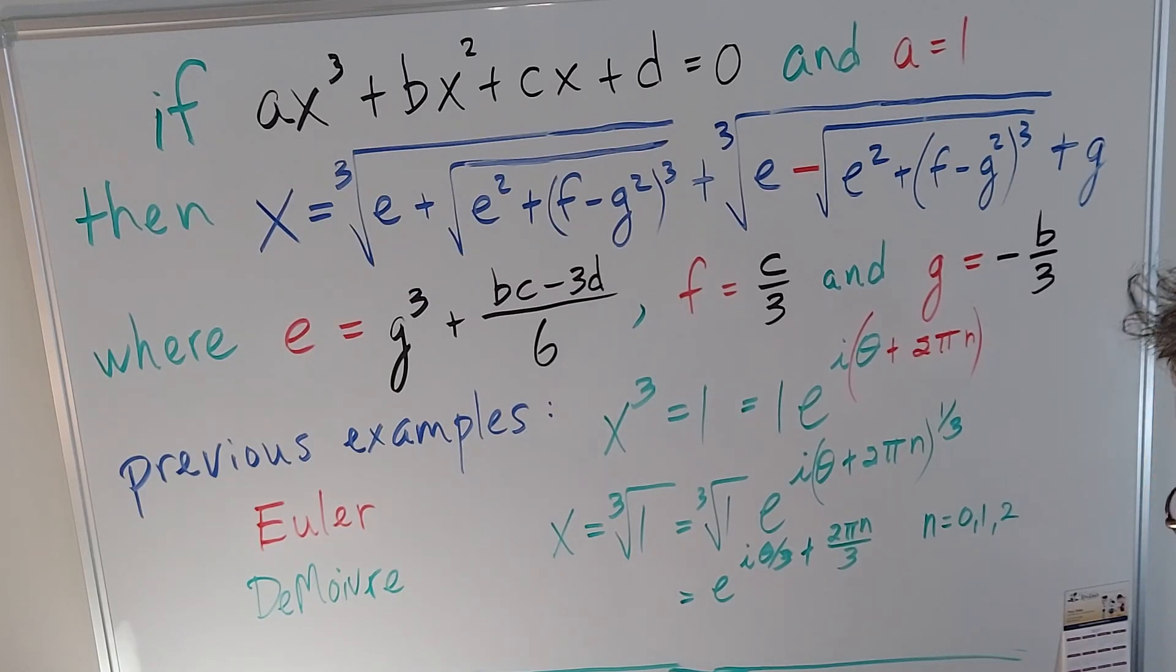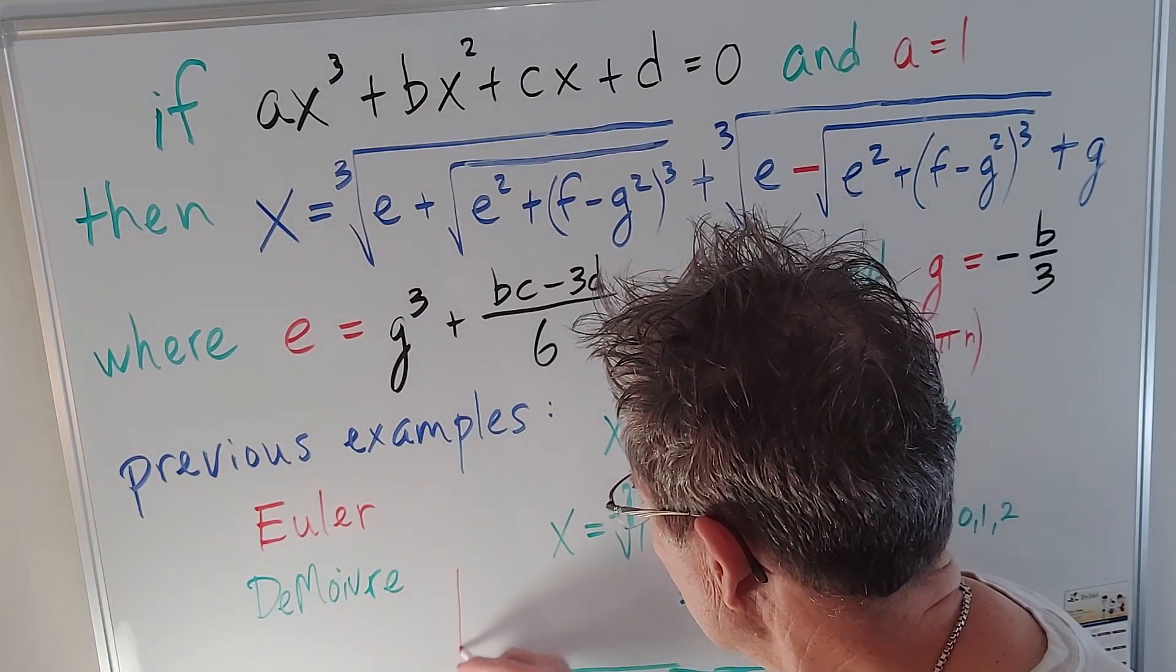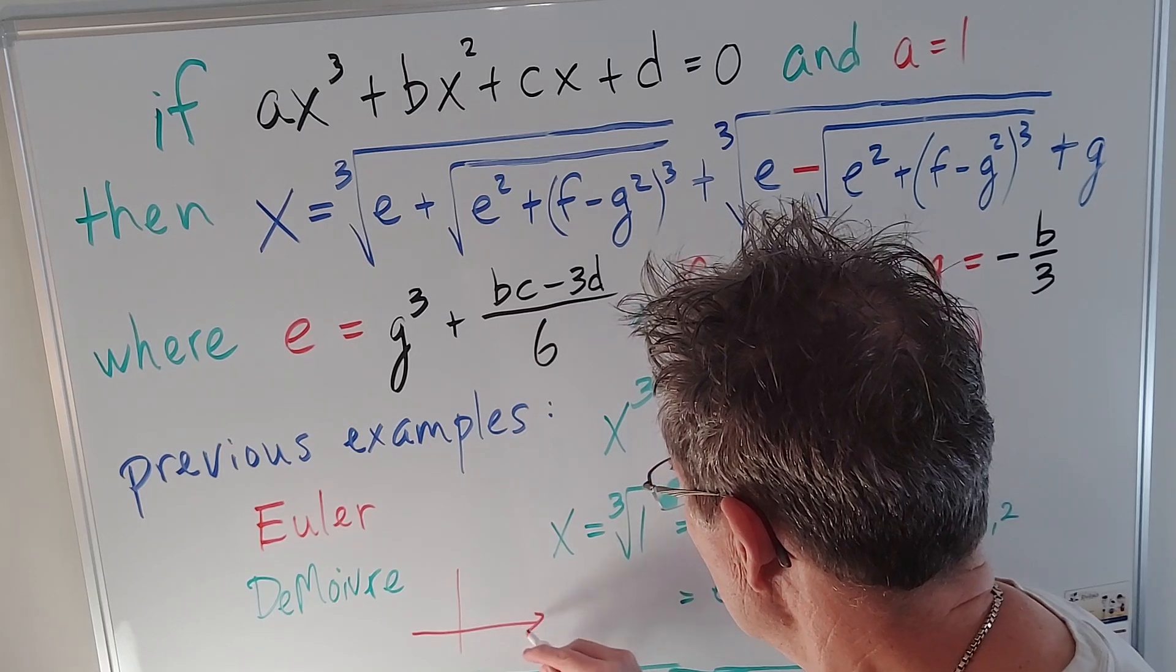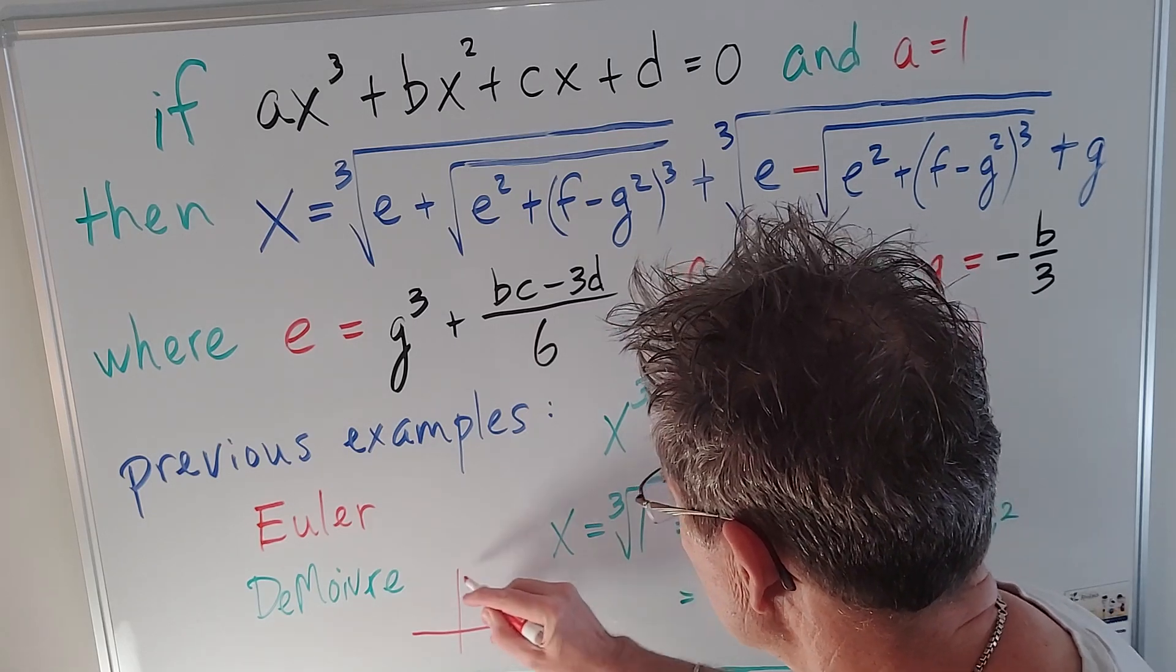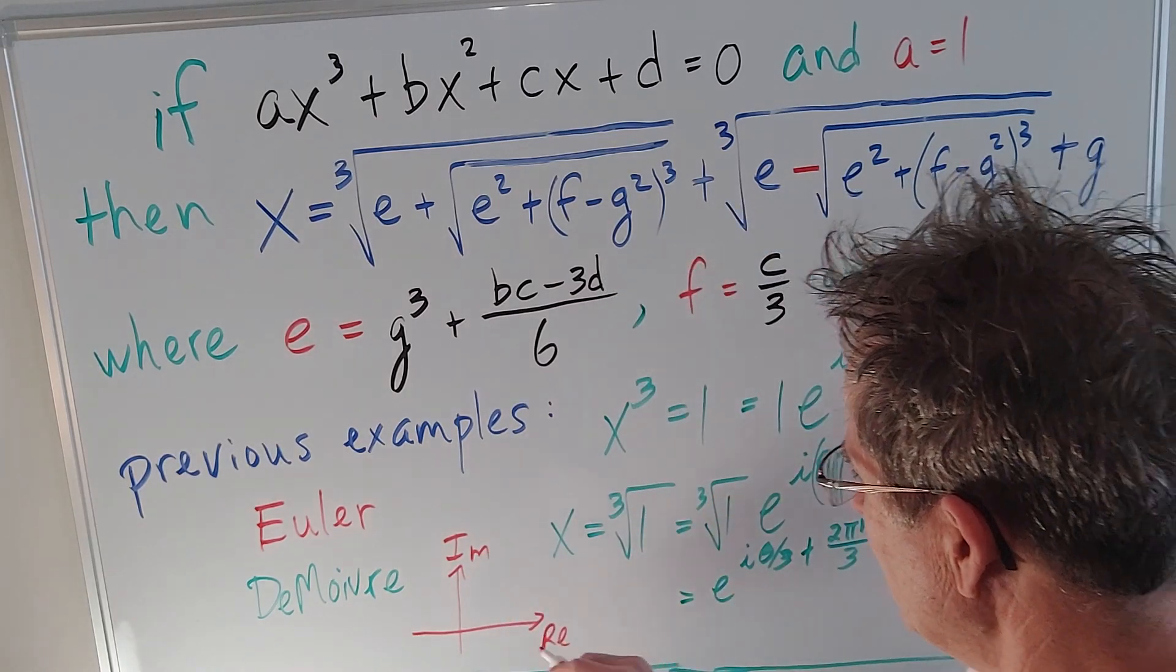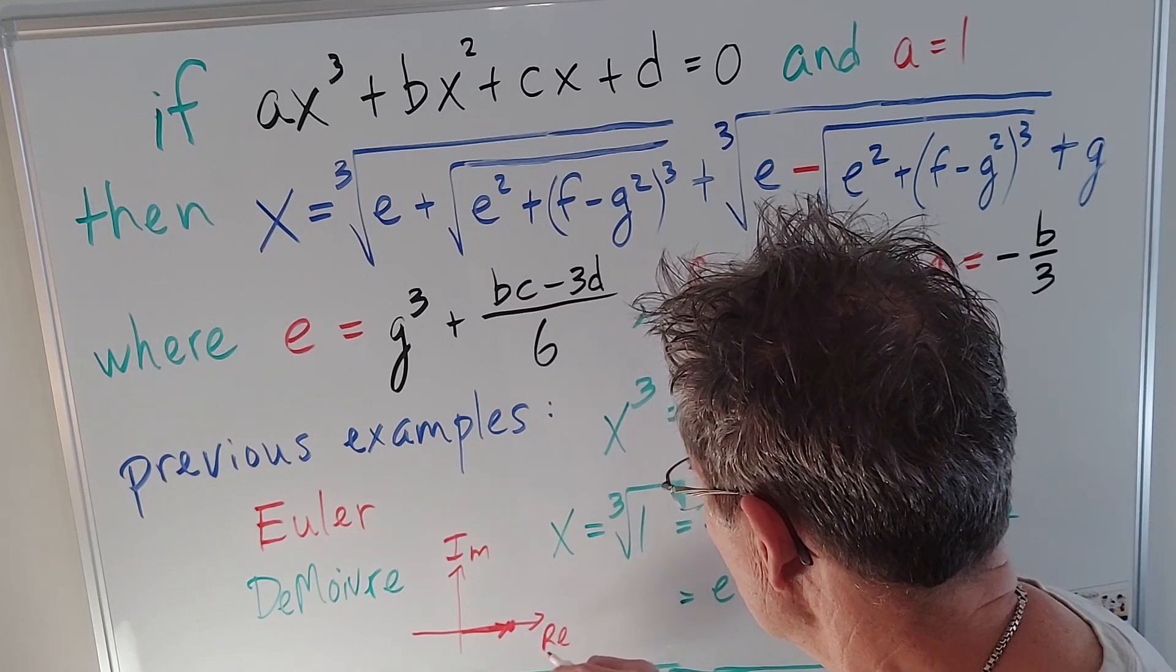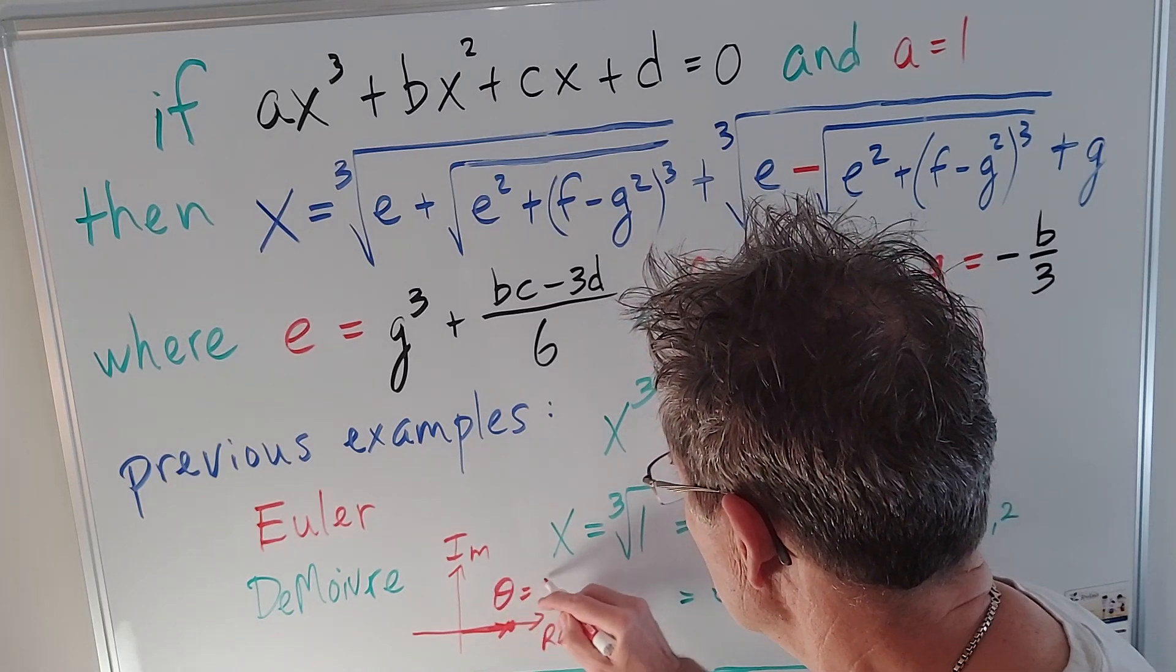Now what's the basic angle for the number one? Well if we look at the graphical representation where this is the real part and this is the imaginary part, the number one is just one unit to the right so the basic angle is zero degrees.